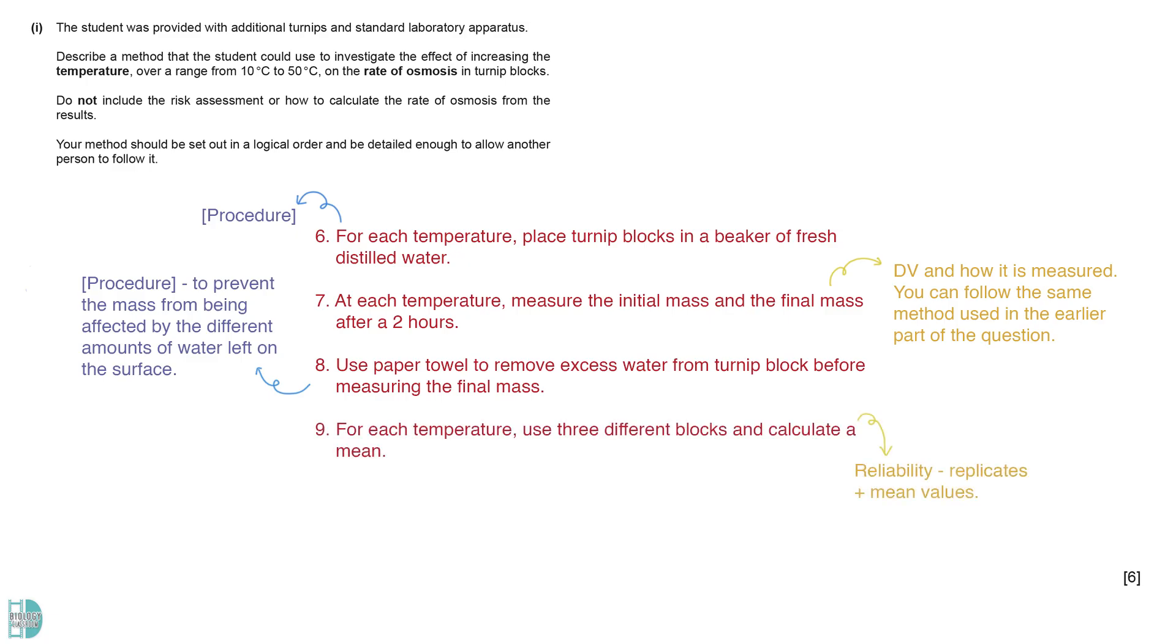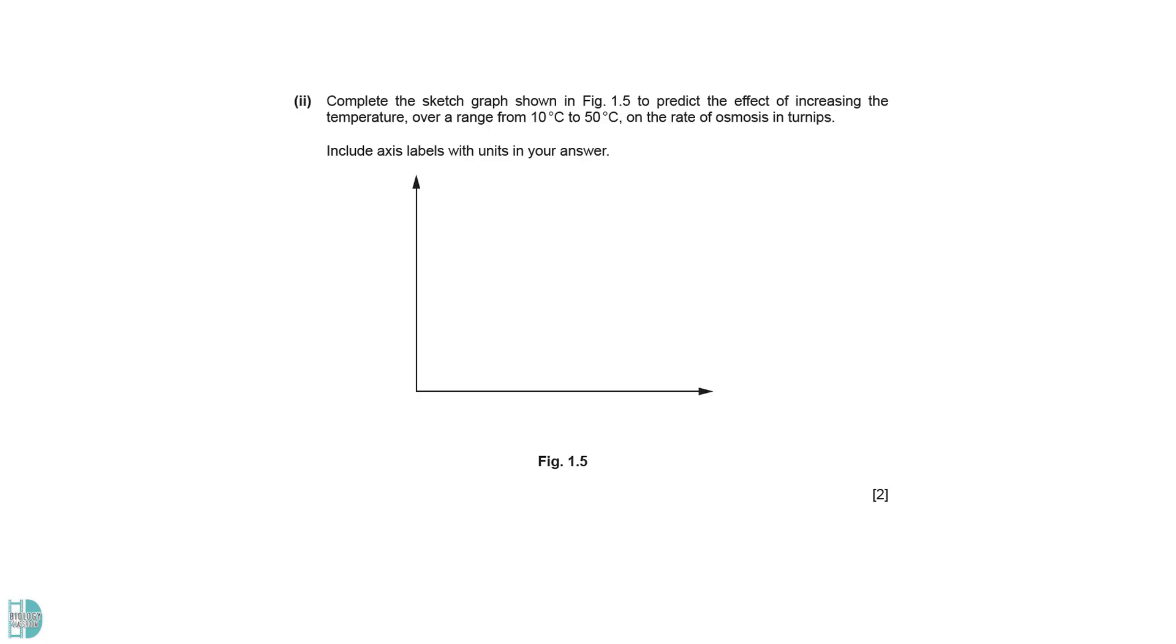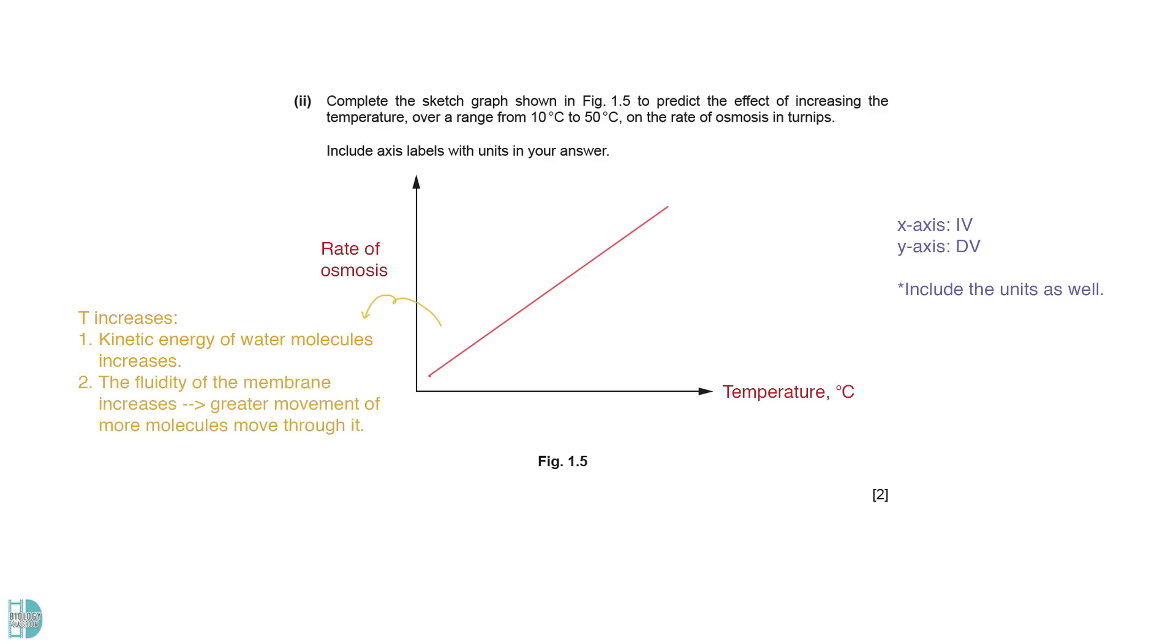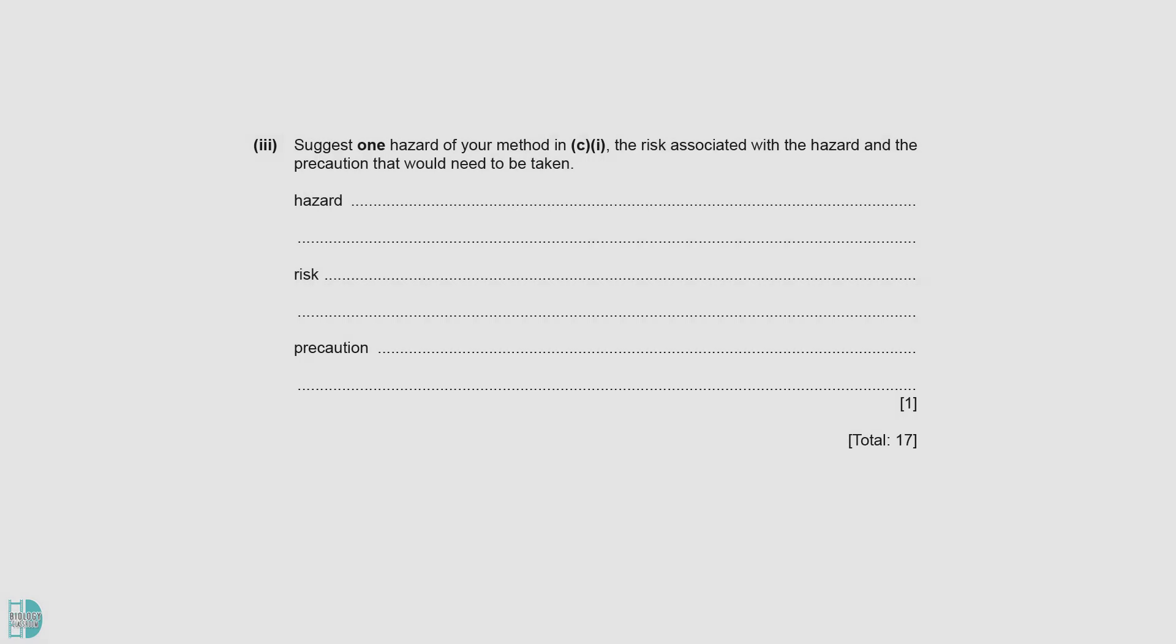For reliability, we must have at least three replicates for each independent variable. Mean values are calculated. Part 2: Complete the sketch graph to predict the effect of increasing the temperature. The x-axis is the independent variable and the y-axis is the dependent variable. Include the unit as well. The rate should increase when the temperature increases. This is due to the increasing kinetic energy of water molecules. The fluidity of the membrane also increases with temperature, leading to a greater movement of molecules through it.